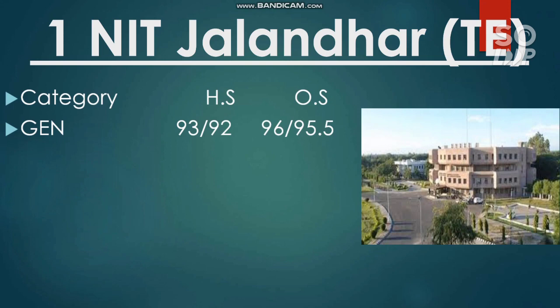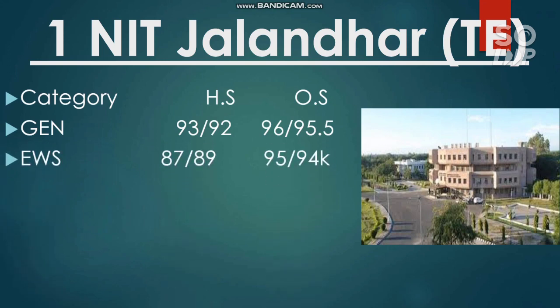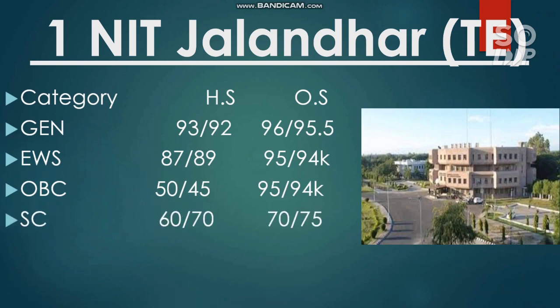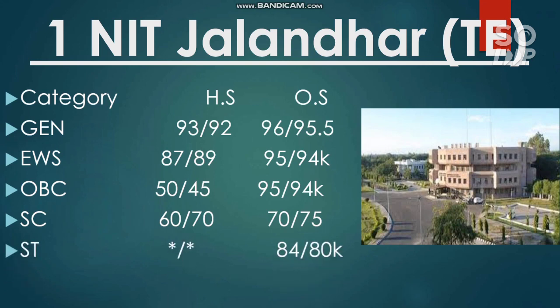For other state students category-wise: EWS requires 95 and 94 percentile, OBC requires 95 and 94 percentile, SC requires 70 and 75 percentile, and ST requires 84 and 80 percentile to clear the cutoff for NIT Jalandhar Textile Engineering.